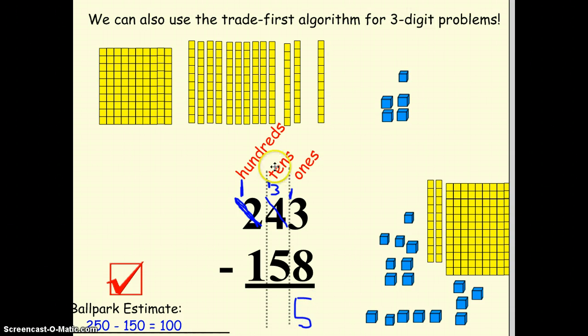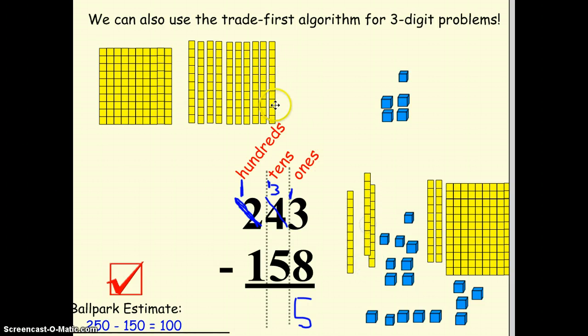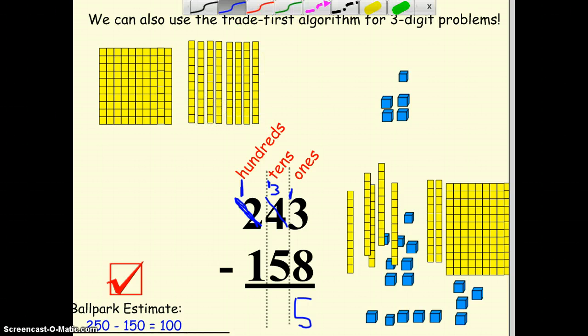And now I have 13 tens here, 13 sticks. And I'm going to take away 5 of them. So 1, 2, 3, 4, 5. And so that leaves me with 1, 2, 3, 4, 5, 6, 7, 8 sticks, 8 tens. So 13 take away 5 would give me 8. 13 tens take away 5 tens gives me 8 tens.